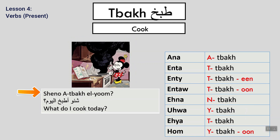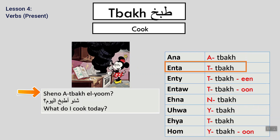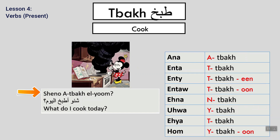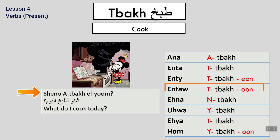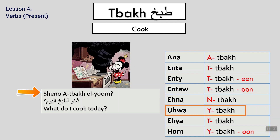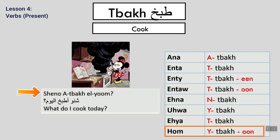Tabakh — to cook. Ana atbakh. Enta titbakh. Enti titbakheen. Entau titbakhun. Ahna nitbakh. Uhua yitbakh. Ihya titbakh. Hum yitbakhun. Example: Shu nitbakh il-yom? — What do we cook today?